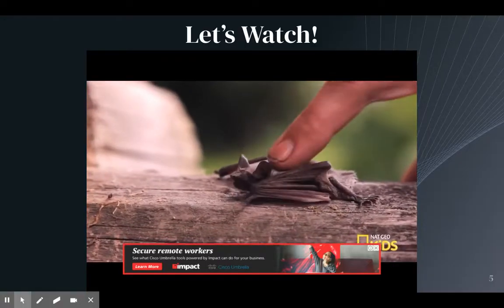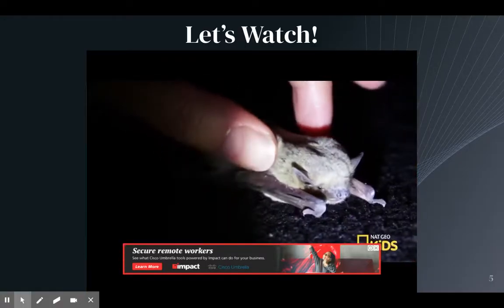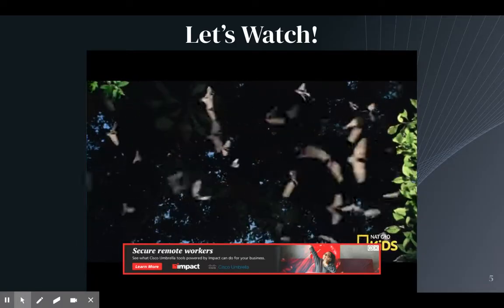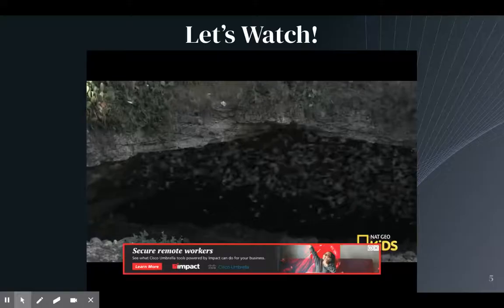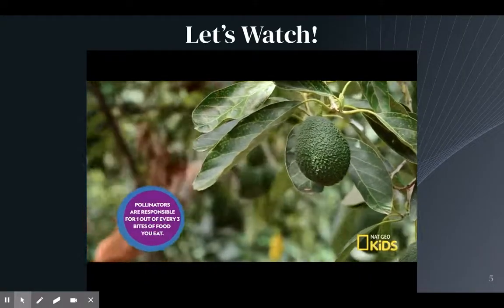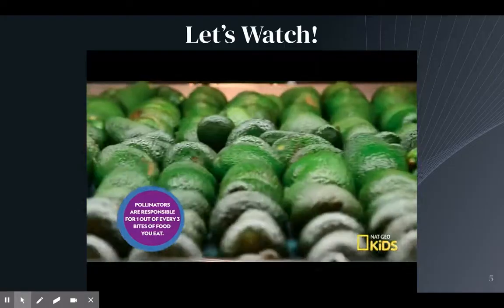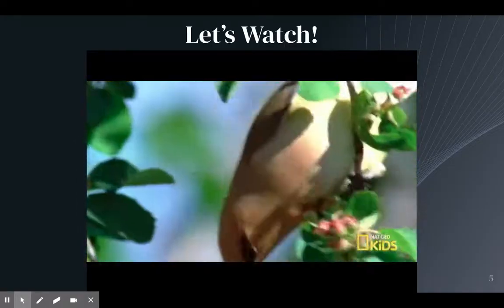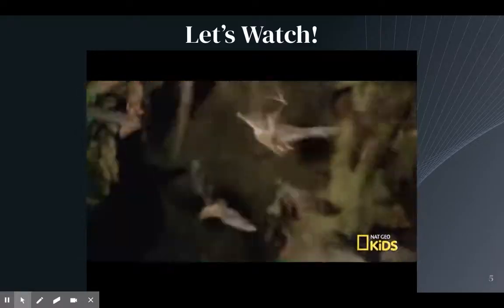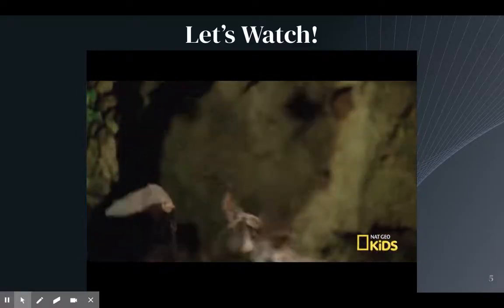There are over 1,300 species of bats found around the globe. More incredibly, one of them is named the world's smallest mammal, the bumblebee bat. Bats are the only flying mammal on Earth. And did you know that these furry flyers are also pollinators? They help supply us with some of our favorite foods, like bananas, avocados, and mangoes. Birds, bees, and butterflies pollinate plants during the day. Then bats and moths take over the night shift.